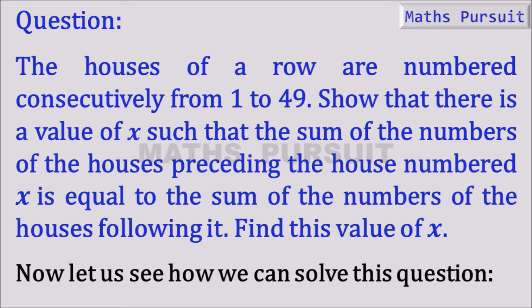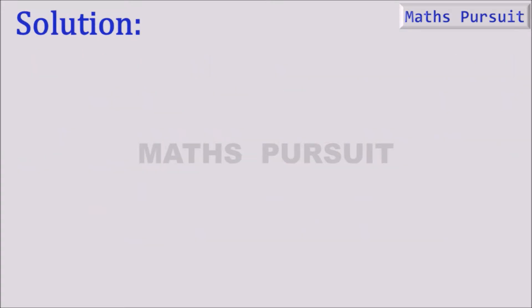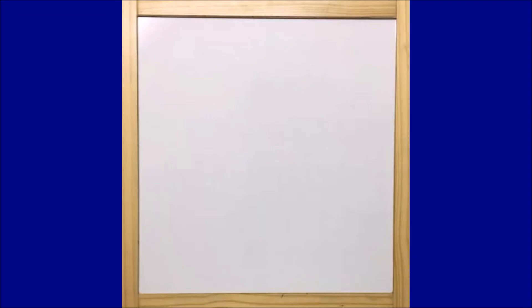Now let us see how we can solve this question. As per this question, it looks a little bit complicated but once we understand the question it is good to go. There are total houses numbered 1 to 49 in a row.